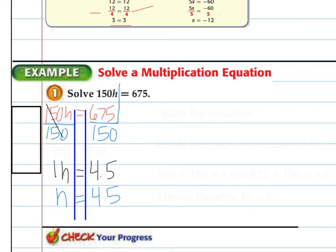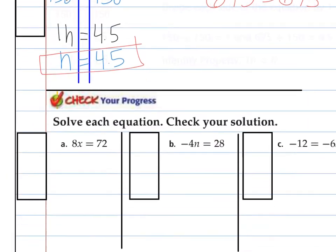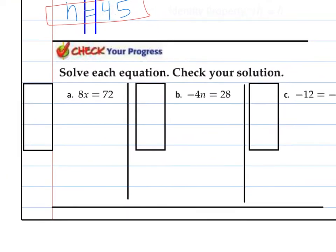You should always check your solution, and that means to plug it back in and make sure that they equal each other. I know that 4 times 100 is 400. 4 times 50 is 200, so I'm at 600. Half of 150 is 75, so I'm at 675 equals 675. That means this is true. So try to do these and check your solutions.